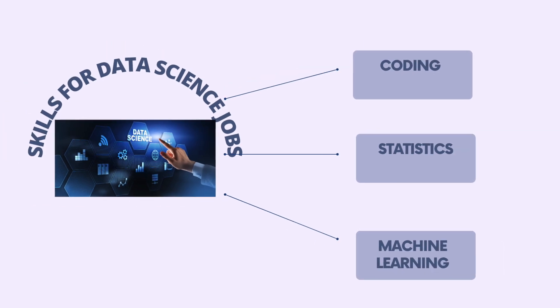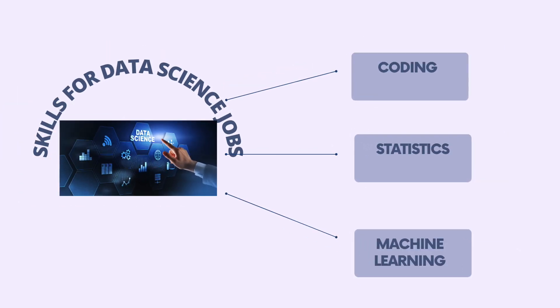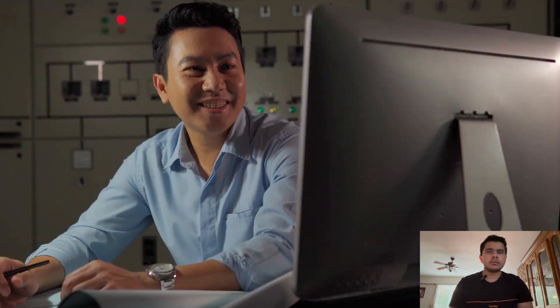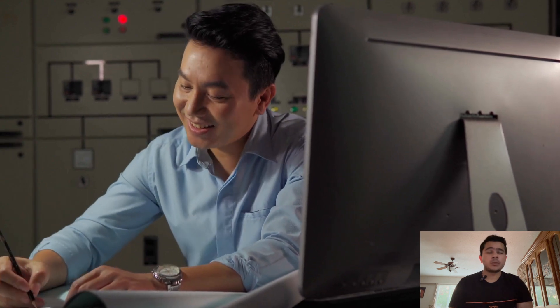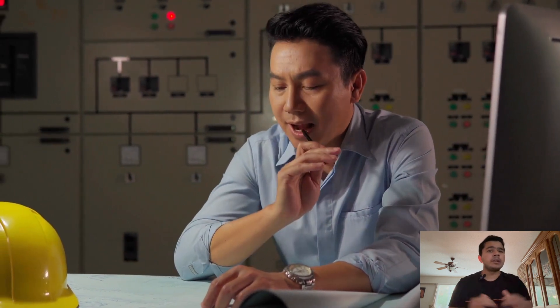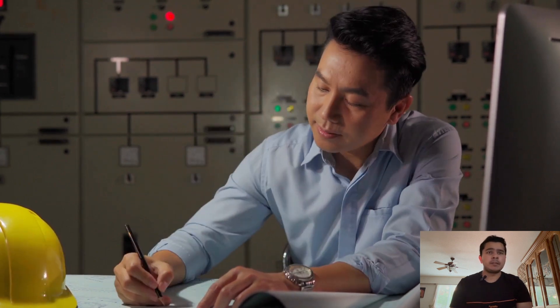A mathematics degree provides a solid understanding of linear algebra, calculus, and statistics. Proficiency in programming languages like Python and R also goes a long way. Knowledge of probability, inferential statistics, and experimental design helps a data scientist grow in their career. Engineers who possess strong analytical and problem-solving skills can also transition well into data-centric roles. Supplementing an engineering degree with coursework in mathematics, statistics, or programming languages like Python can give you a head start in data science.